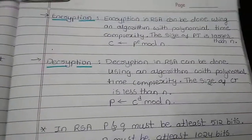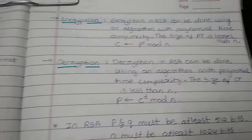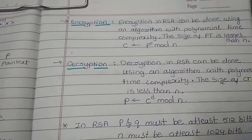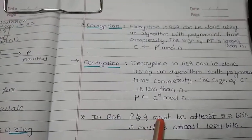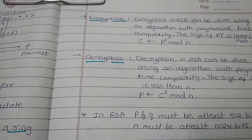When encrypting we use the formula C equals P to the power E mod N. For decryption purpose again P equals C to the power D mod N.